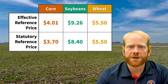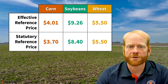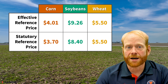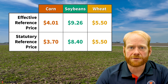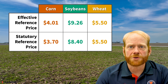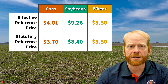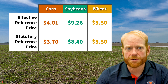For 2024, the PLC effective reference prices for corn and soybeans are above the minimum statutory levels for the first time since the escalator provision, which allows adjustment in the reference price, was established in the 2018 Farm Bill. This is due to higher market year average prices from 2018 to 2022. Corn's 2024 PLC effective reference price is $4.01 per bushel. For soybeans, it's $9.26 per bushel.